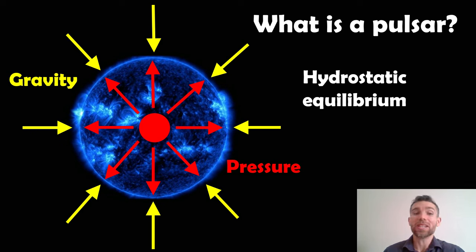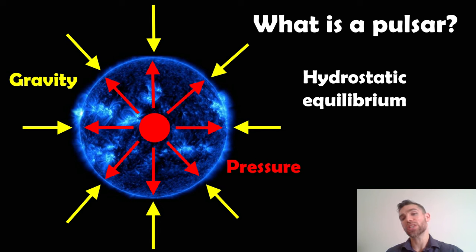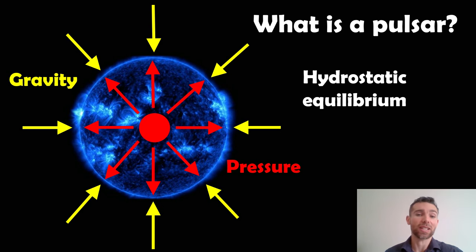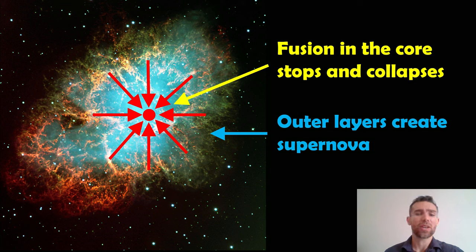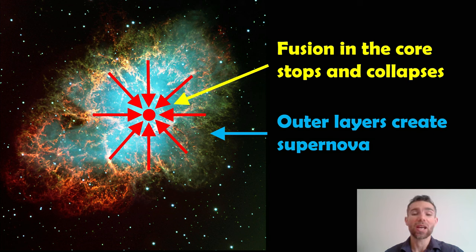When they're on the main sequence, these big massive stars are in hydrostatic equilibrium — that means they're generating energy in their core, producing energy, which causes an outward radiative pressure. This balances out the gravitational forces and the star is in hydrostatic equilibrium. When fusion stops in the core, there's nothing to support the star against gravitational collapse. The core collapses, and depending on the mass of the star, you end up with a neutron star, or for the very big stars, a black hole.